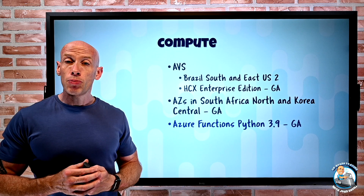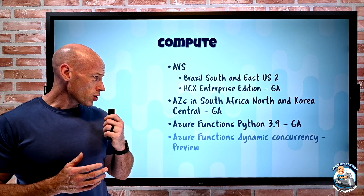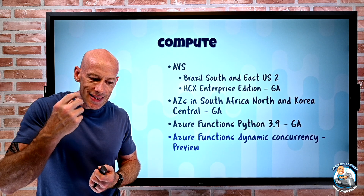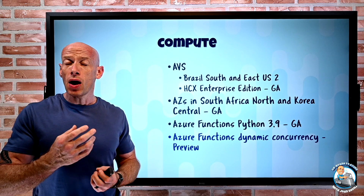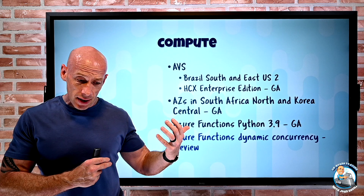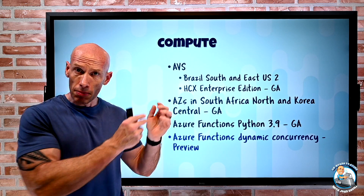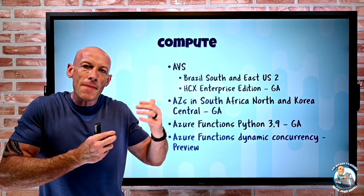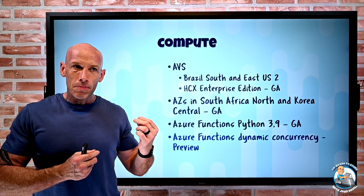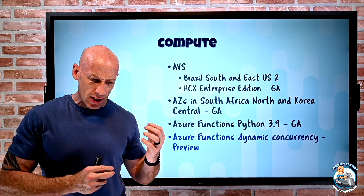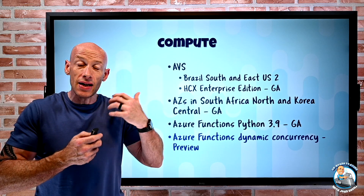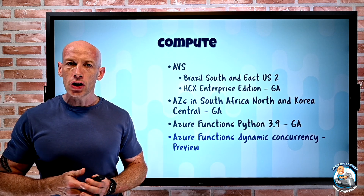Azure Functions now has Python 3.9 support. It also now has dynamic concurrency in preview. A function is serverless and triggered by something. When running functions as part of a plan with a certain set of resources, it's common to have multiple concurrent invocations. Previously you could only set a static concurrency, but now in preview there's dynamic concurrency — it looks at available resources and the load pattern, and tunes how many concurrent instances are allowed based on what it's learned about the environment.